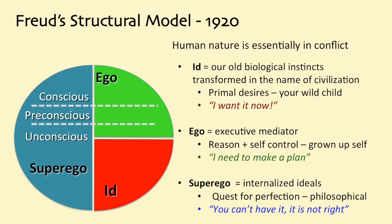In the 1920s, Sigmund Freud developed his three-part model of the human psyche, and again there was conflict between the three parts. The primary part is the id — the primal desires, your wild child, the part that wants to have it now. The ego is the reason, the self-control, the grown-up self — the part that says I need to make a plan. The superego, on the other hand, is the internalized ideals — the quest for perfection, philosophy, the part of you that says you can't have it because it is not right.